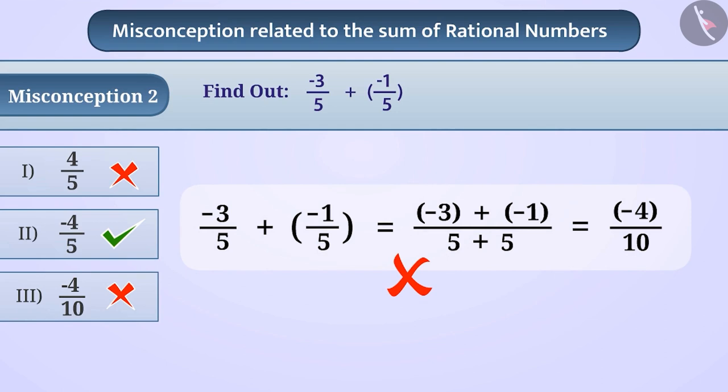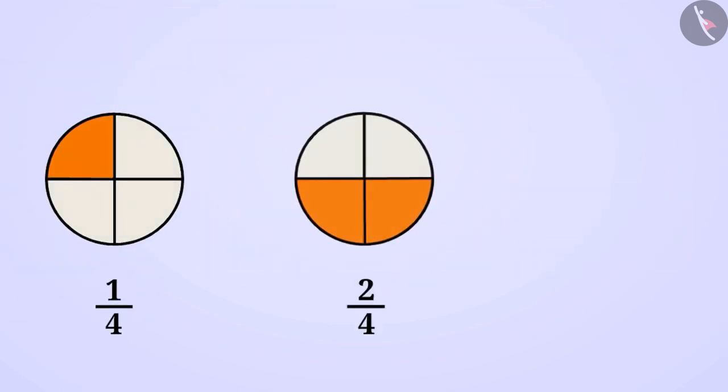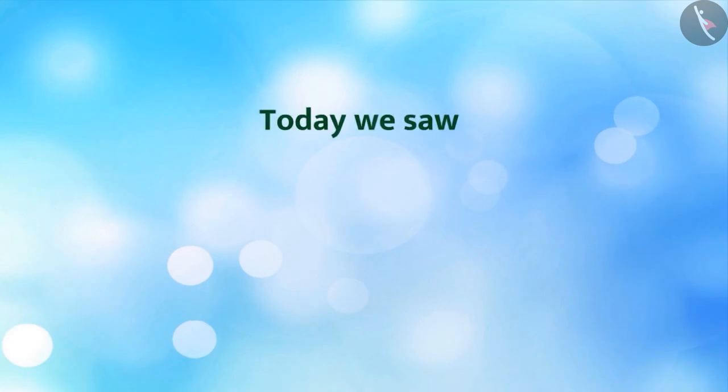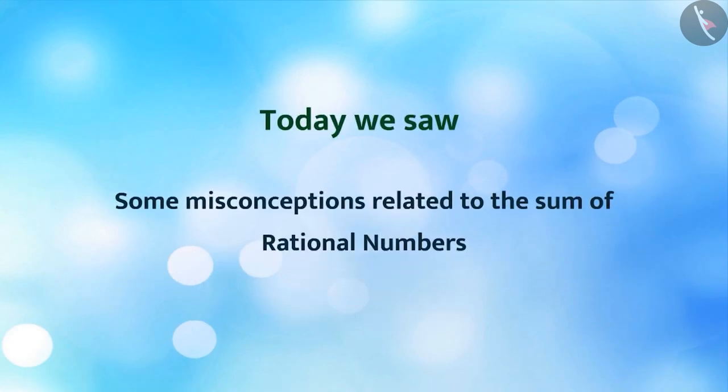Let's get a better understanding of this. We have 1 by 4 and 2 by 4. If we put them together, we will get 3 by 4 and not 3 by 8. So now your misconceptions related to rational numbers must have been removed. Today we saw some misconceptions related to the sum of rational numbers.